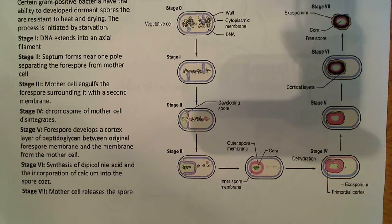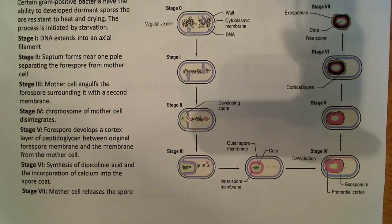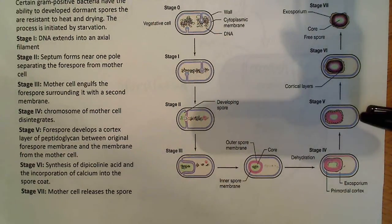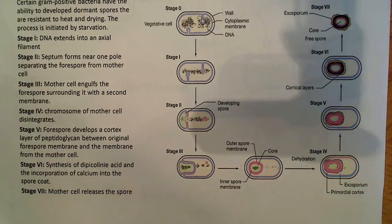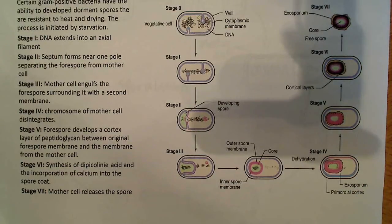So in stage five, the forespore develops a cortex layer of peptidoglycan between the original forespore membrane and the membrane from the mother cell. So that can be seen here in stage five. And in stage six, there's synthesis of a specific molecule and the incorporation of calcium into the spore coat.